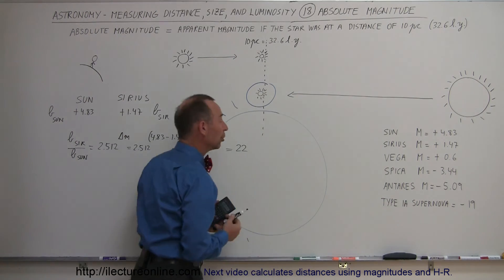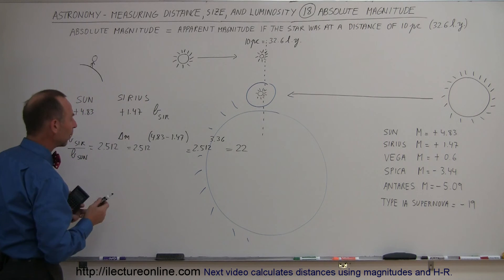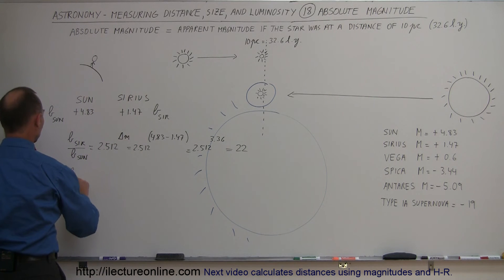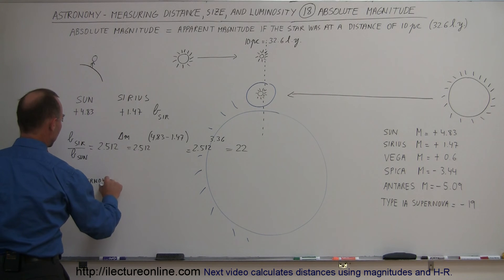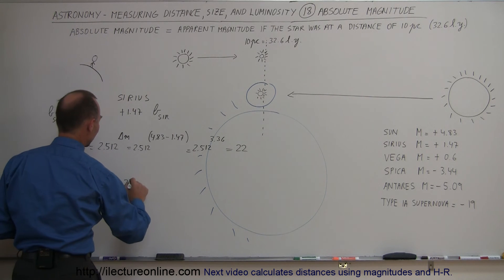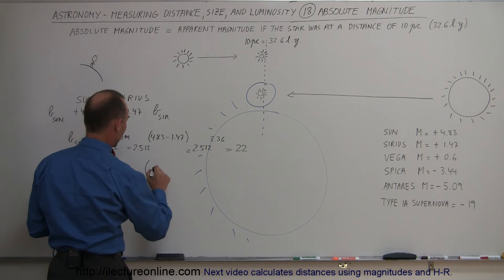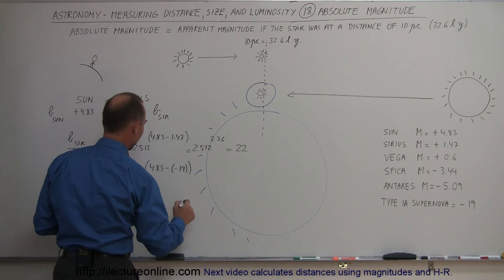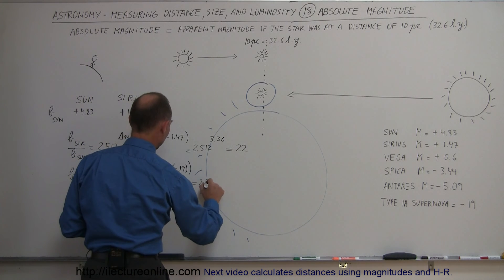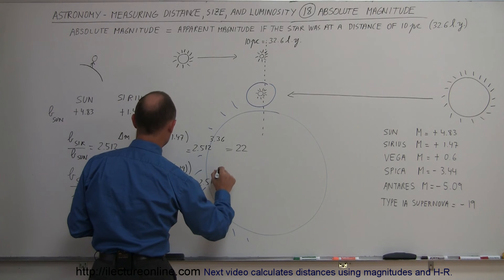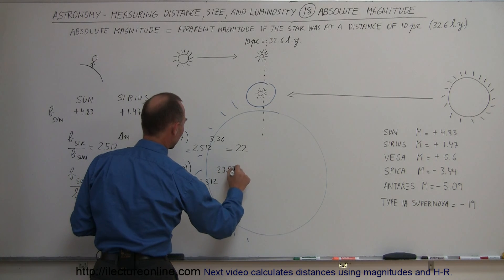Now, let's compare a type 1a supernova. How much light does it put out? And that will be absolutely enormous. So the light or the brightness of a supernova, of course, we're talking about type 1a divided by the brightness of the sun is equal to 2.512 and then, of course, the difference would be 4.83 minus a minus 19. So that, of course, would be 2.512 raised to the 23.83 power.